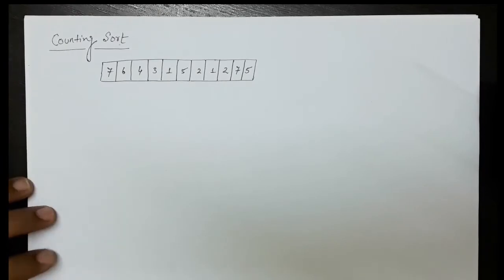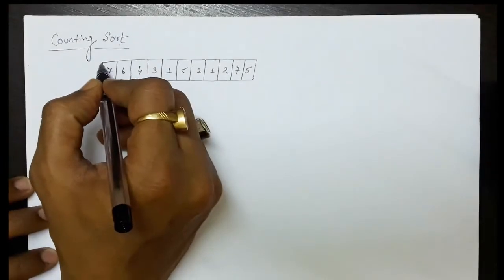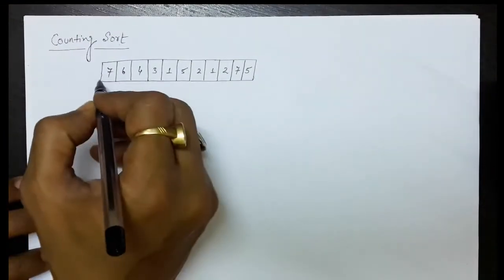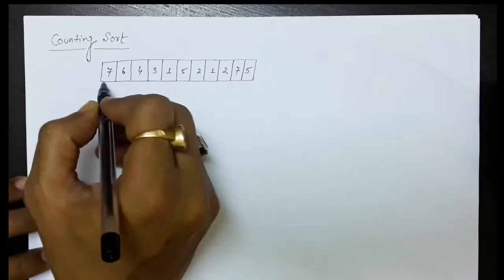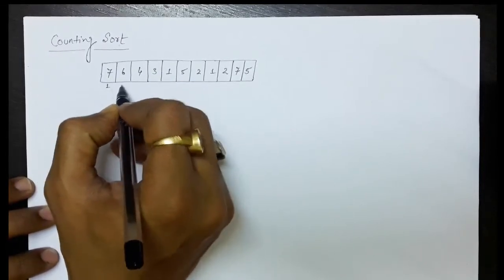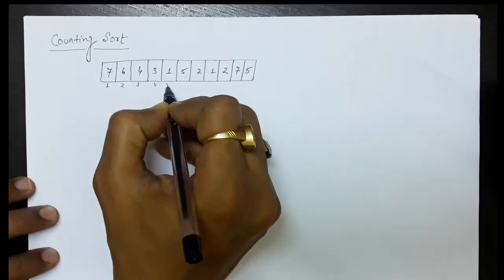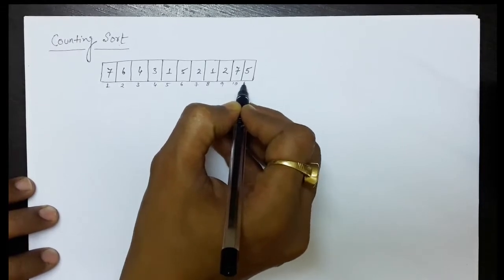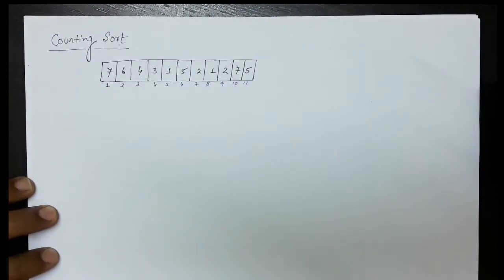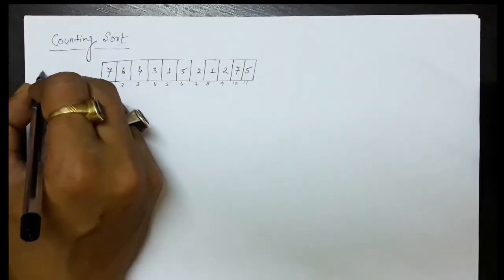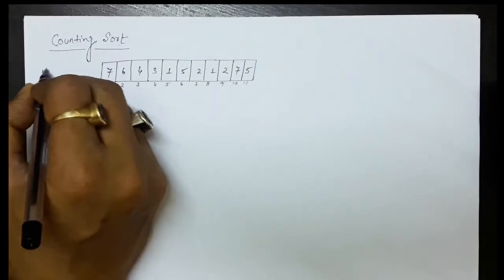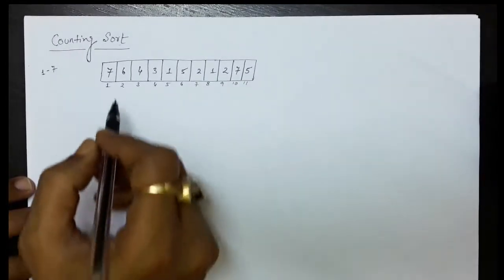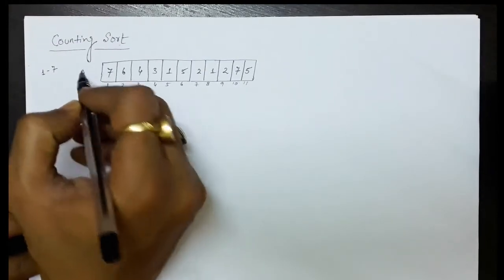Counting sort is a linear time sorting technique which sorts numbers in order of N time. Let's take another example to understand this. We have an array with indexes starting from 1, containing 11 elements. The range of numbers appearing in this array is 1 to 7 — the smallest number is 1 and the largest is 7. Some numbers in between may be repeated.